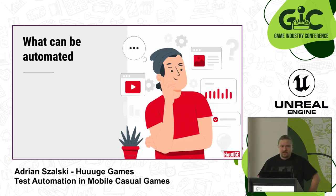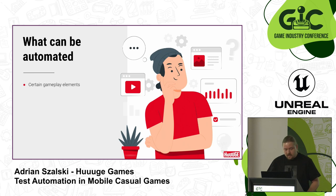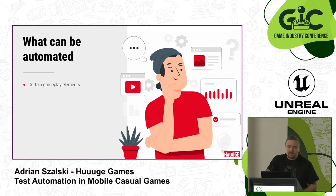So what can we automate in our games? You would think about certain gameplay elements, because that's the main part of the game. But you have to think about what kind of game it is. If it's a slower-paced puzzle game, for example Traffic Puzzle, then it's fairly simple to automate gameplay elements. But if it's a faster game like Diablo Immortal, I'd risk just doing some testing on menu flows, or the backend, because the gameplay itself might be a little bit tricky.